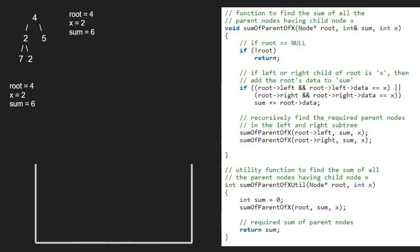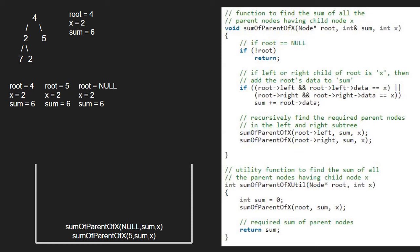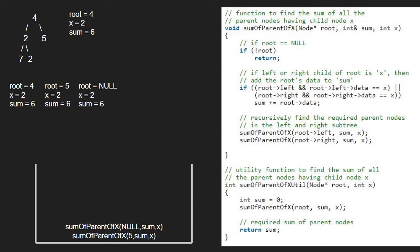Execution for node 4 is resumed and now we pass the right child of 4, which is 5, so root will point to 5. Since root is not null, we check if left or right of root is equal to x. As it is not, we pass the left child of 5 which is null. Since root is null, we return. Next we pass the right child of 5, which is also null. As root is null, we return and finish execution for root 5.